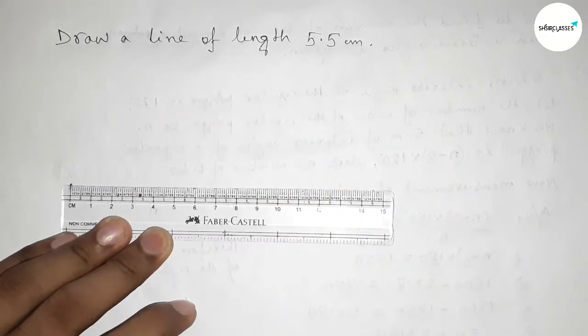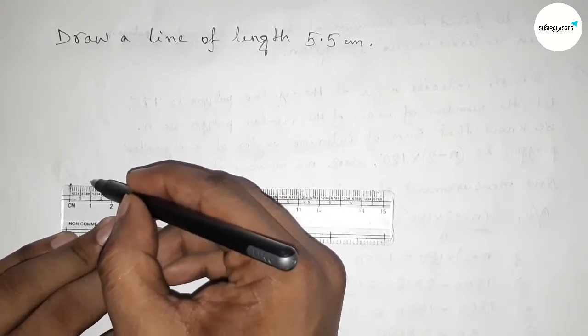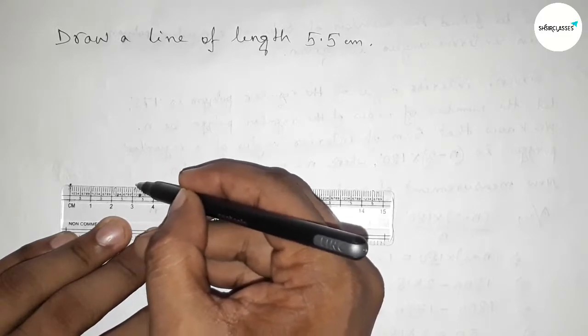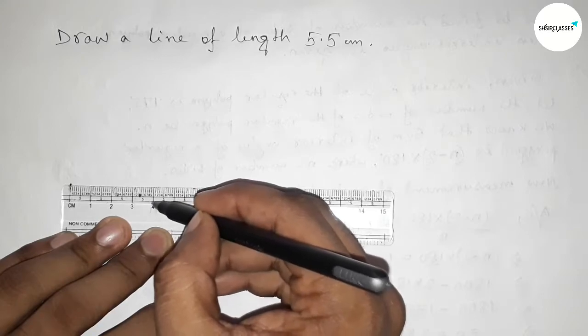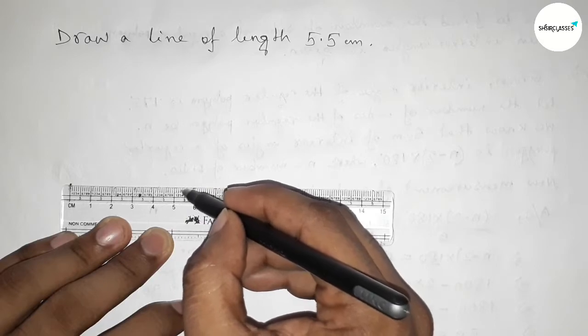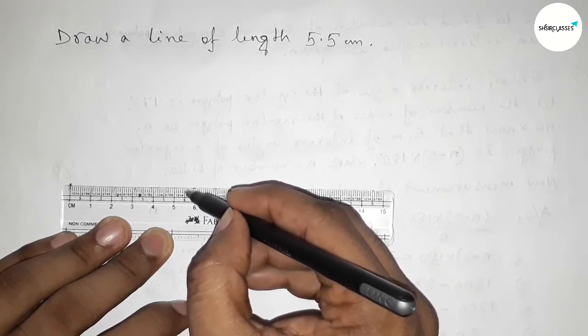So here is starting zero, now counting 5.5. So this is one centimeter, this is two centimeter, this is three centimeter, this is four centimeter, this is five centimeter. So five point one, two, three, four, five. So this is five point five centimeter.